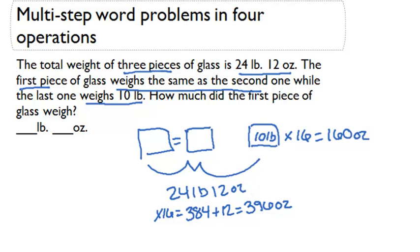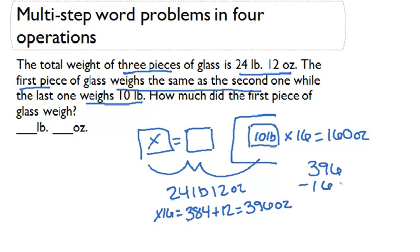Since we already know that the third piece weighs 160 ounces, we can just subtract that from our total. What we're looking for is what the first piece weighs. So if we have 396 and we subtract 160 from it, we're going to end up with 236 ounces. This is the total weight of the first two pieces of glass.